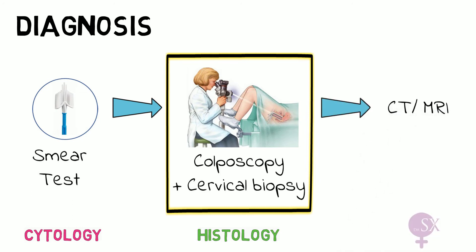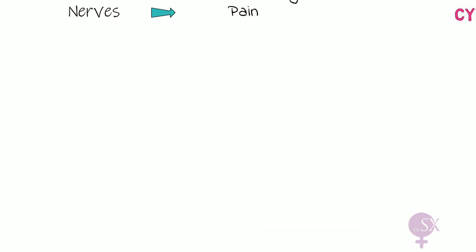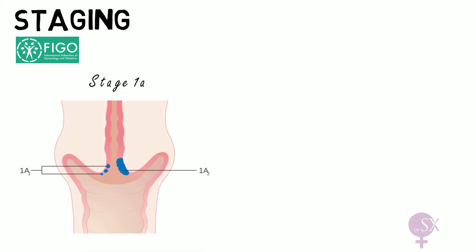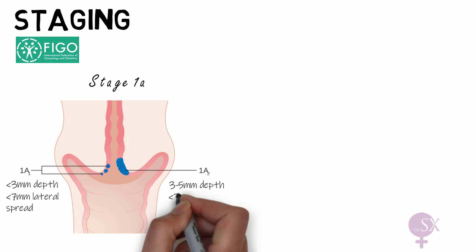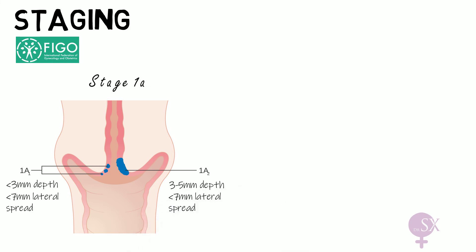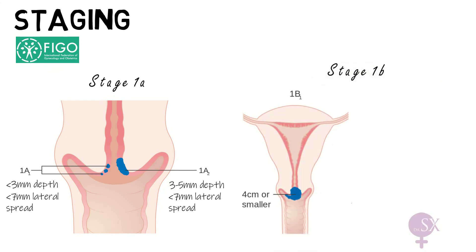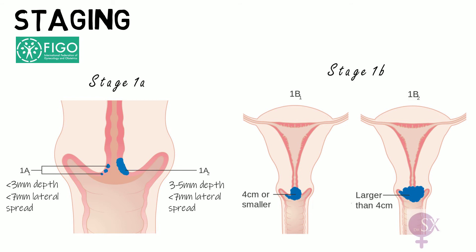This is the FIGO staging of cervical cancer. In stage 1, lesions are confined to the cervix. In stage 1a1, the lesion has invaded less than 3 mm in depth and spread laterally less than 7 mm. In stage 1a2, invasion is more than 3 mm but less than 5 mm deep, with lateral spread less than 7 mm — both only visible microscopically. In stage 1b1, the lesion is clinically visible but smaller than 4 cm; in stage 1b2, it is more than 4 cm in greatest diameter.